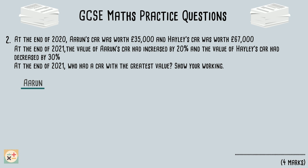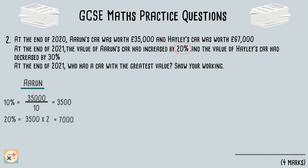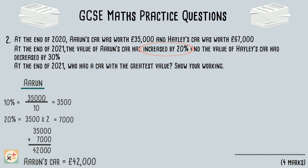We are told the starting value is £35,000 and after one year the value has increased by 20%. You can use any method you find easiest to find 20% of 35,000. Here we are going to firstly find 10%, then double this answer to find 20%. We are told the value has increased by 20%, so we add 7,000 onto the original value of 35,000. The new value of Aaron's car is £42,000.